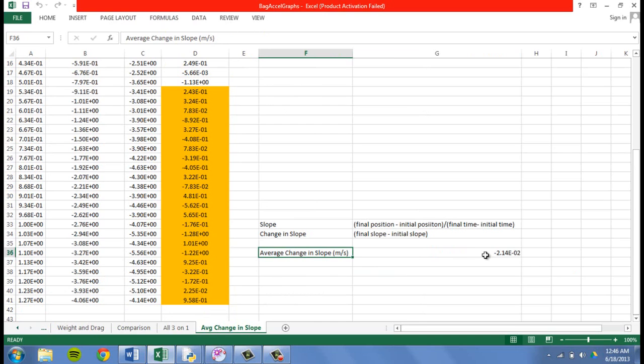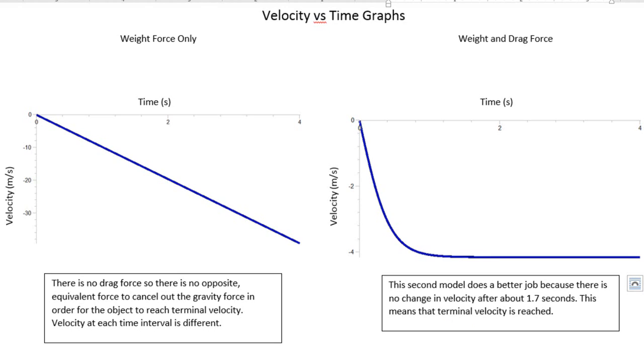If I had dropped the bag from a higher point, I'm sure I could have even gotten lower numbers to a point where the change in velocity would be zero, meaning terminal velocity was reached. Now, let's answer the questions.